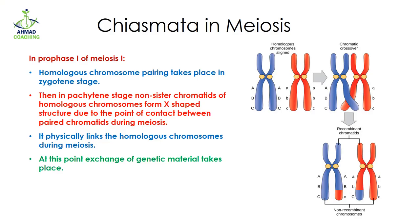Welcome to Ahmed Coaching. Today we will study about chiasmata in meiosis. In the process of meiosis, we know that there are two stages: meiosis one and meiosis two. In meiosis one, we have prophase one, which is further divided into different sub-stages.